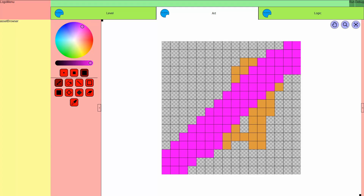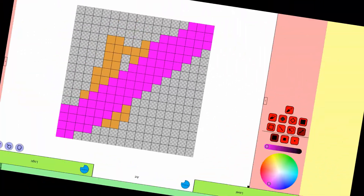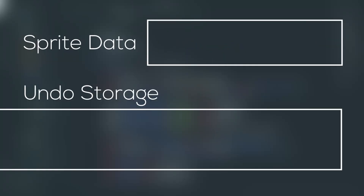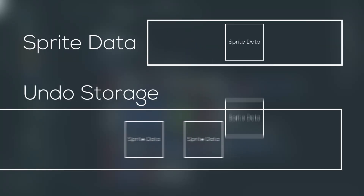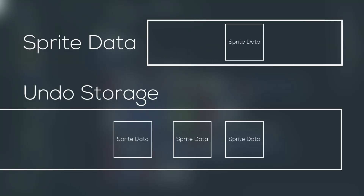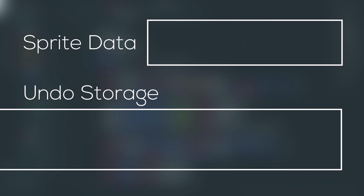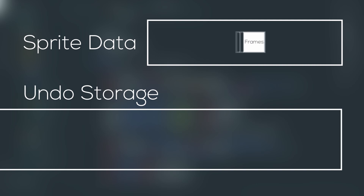Oh no, I painted over my flesh monster. Time to implement an undo system. In theory, the undo system is really easy: just store a copy of the current state in a list, and whenever you want to step back, pop the previous state off the list and load that into the sprite data.